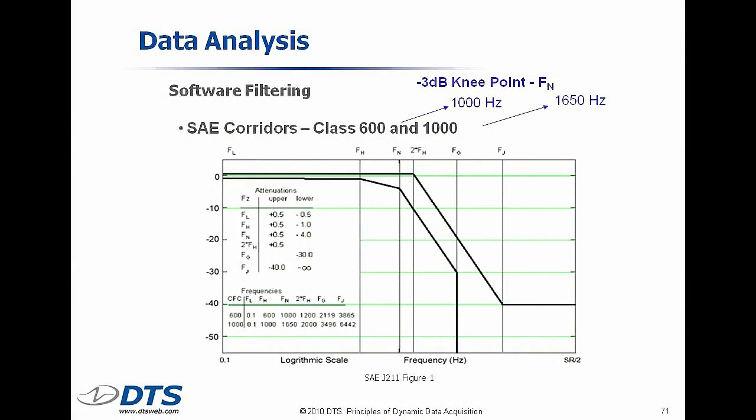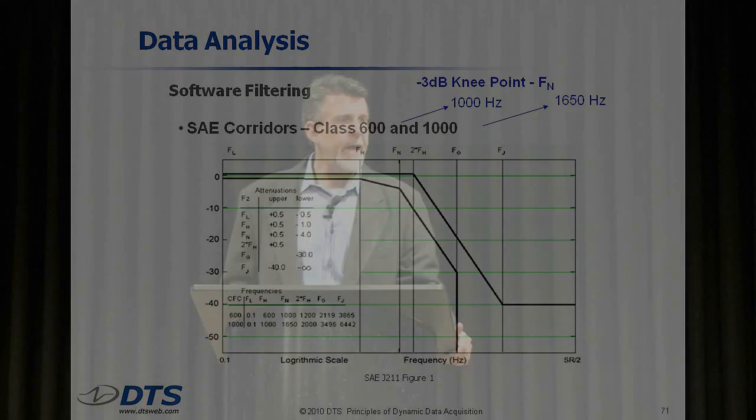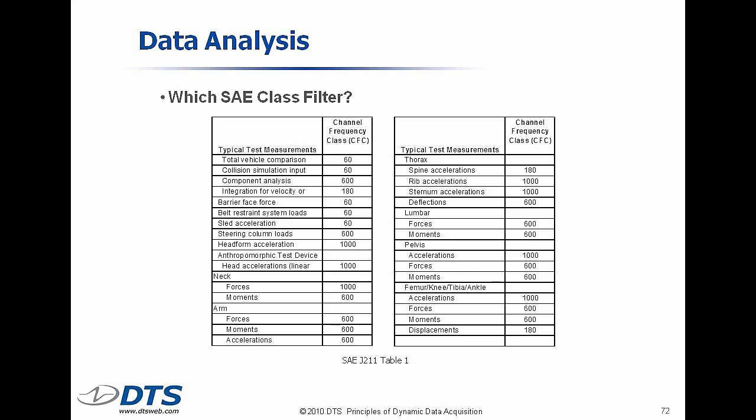If you're using a data analysis package like Diadem or some other analysis package, the filters programmed in there have to fall into these corridors. There's class 60 and class 1000. These corridors look a little different because in the standard, if you read the fine print, you're allowed to develop your system performance differently between the 60 and 180 and the 60 and 600 and 1000. What filter class do you use? There's a nice table in SAE J211. If you want to know what filter frequency to apply to the lumbar moments from the lumbar load cell, you go to the table and it says you need to use CFC 60, 600. That means my data, if I plug in the numbers for the class 600, needs to fall into this window.